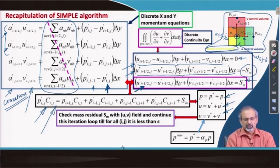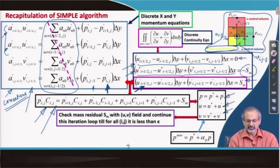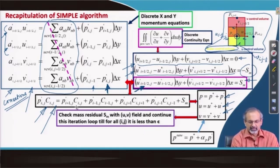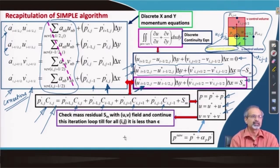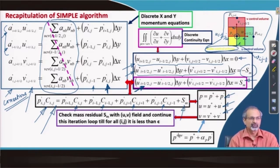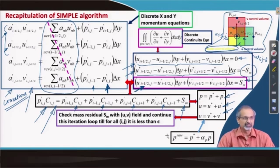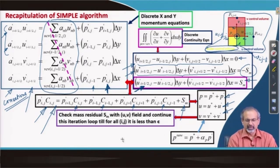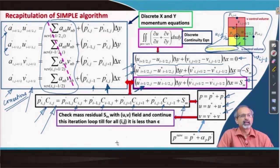Each pressure correction term for each cell will have a coefficient — you can work out all these coefficients as a homework exercise. You will find that the individual coefficients on the right-hand side, when summed, exactly equal the coefficient on the left-hand side. Additionally, you will find the mass defect term S_m, the source term arising from an incorrect estimated velocity field, appearing as a source in the pressure Poisson equation. If the source term did not exist you would have a Laplace equation for pressure, but because there is a source term it is inhomogeneous — hence it is a pressure Poisson equation.